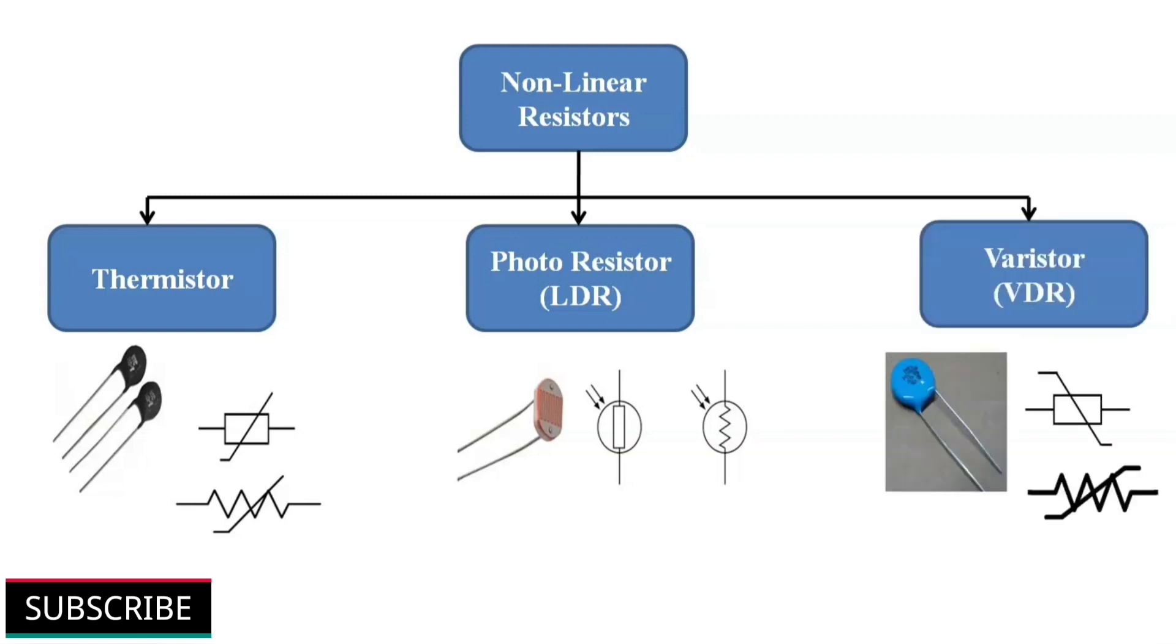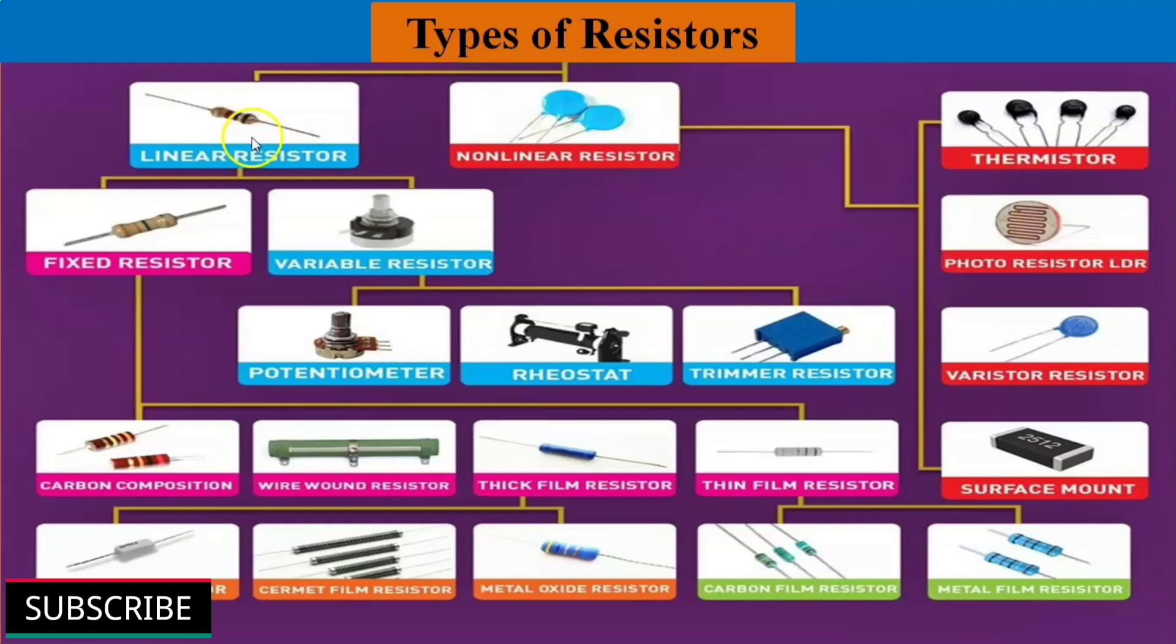Next one varistors. The resistance of a varistor varies with the applied voltage. As the voltage increases, the resistance decreases and vice versa. It is also called as VDR, voltage dependent resistor. Varistors are used to eliminate high voltage transients or spikes.